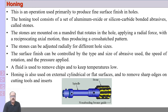The honing tool consists of a set of aluminum oxide or silicon carbide abrasive stones. These stones are fixed in the periphery of the tool and are spring-loaded radially, meaning the diameter of the hone can be adjusted according to the requirement of the hole diameter and then fixed. This honing tool is rotated and reciprocated inside the hole, as honing is mainly done to finish a hole, though it can also be used for surface finishing.